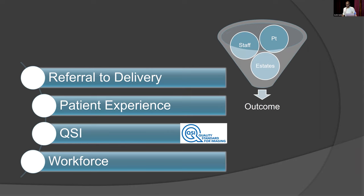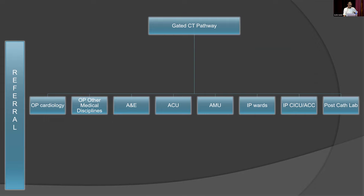Most of our cases come from outpatient cardiology, but we also receive referrals from respiratory, renal, and acute physicians, as well as from the acute chest pain pathway. We get referrals from A&E and the acute ambulatory unit — where patients stay for 12 to 14 hours and may be discharged after imaging. We also receive referrals from CICU, post-cath lab, and all inpatients. We have a large congenital heart disease cohort in our trust and do a lot of imaging for that team.